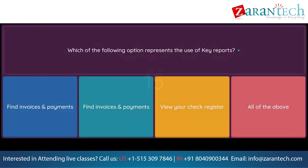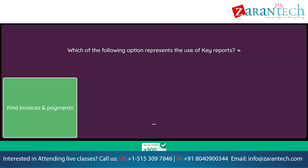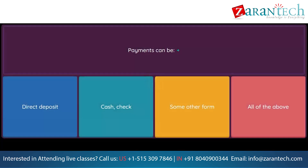Question: Which of the following options represents the use of key reports? Option 1: find invoices and payments. Option 2: find invoices and payments. Option 3: view your check register. Option 4: all of the above. Question: Payments can be. Option 1: direct deposit. Option 2: cash, check. Option 3: some other form. Option 4: all of the above.